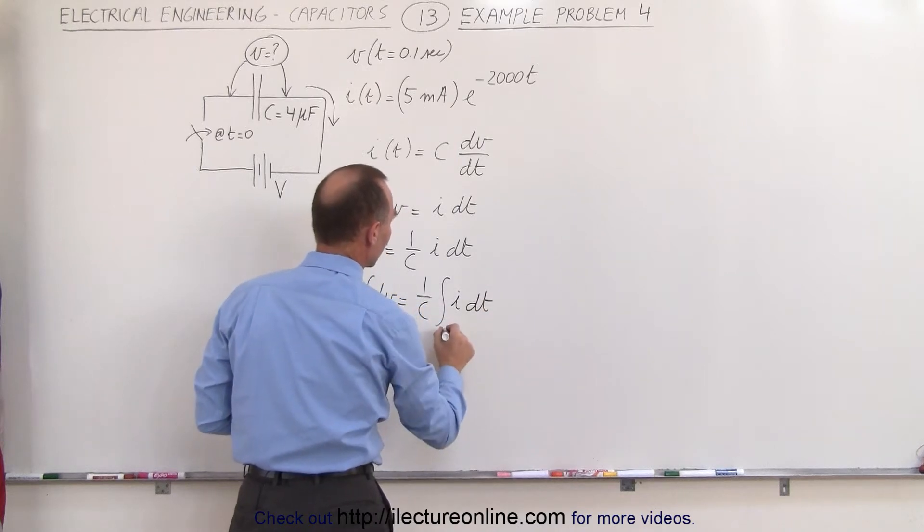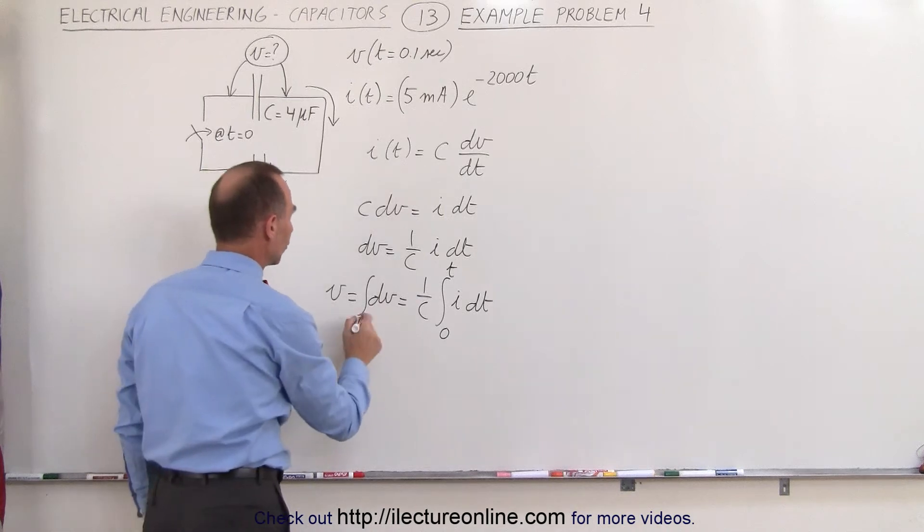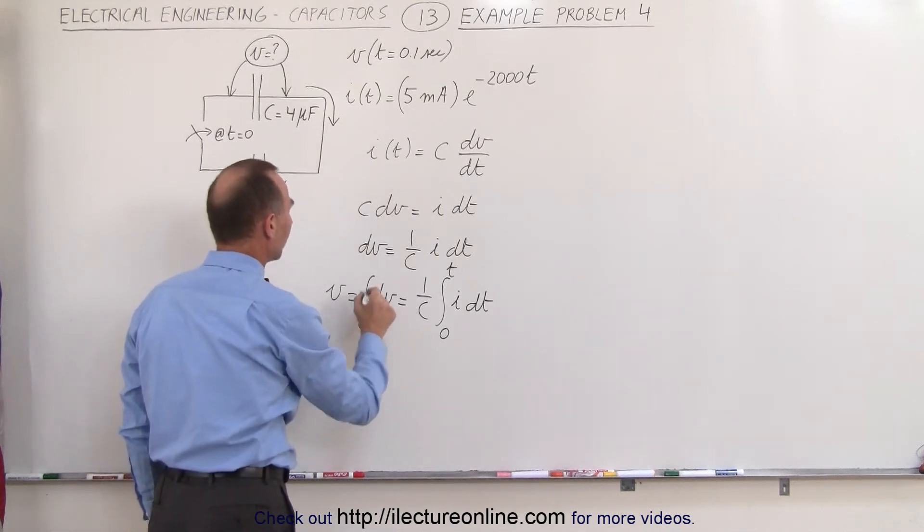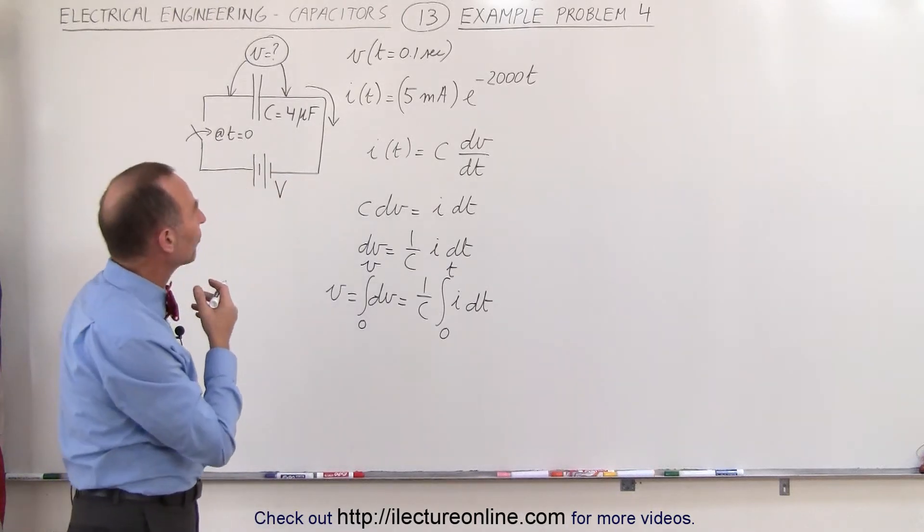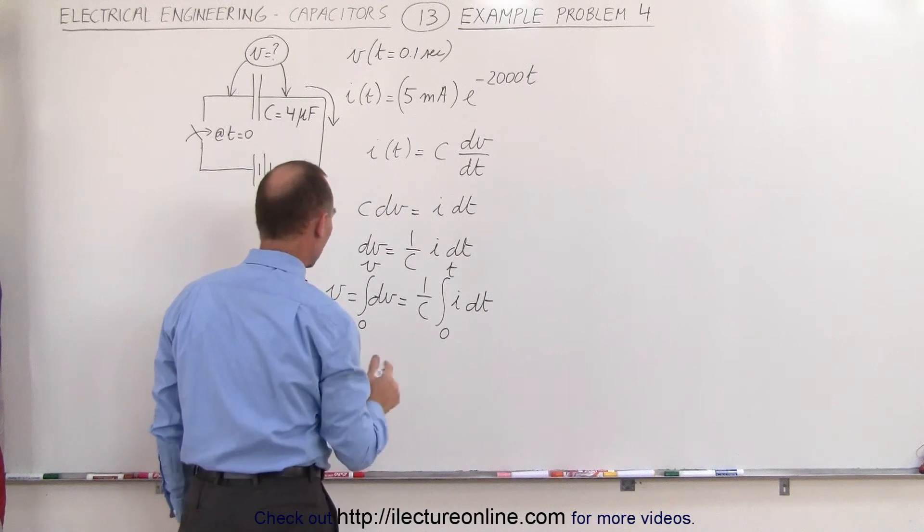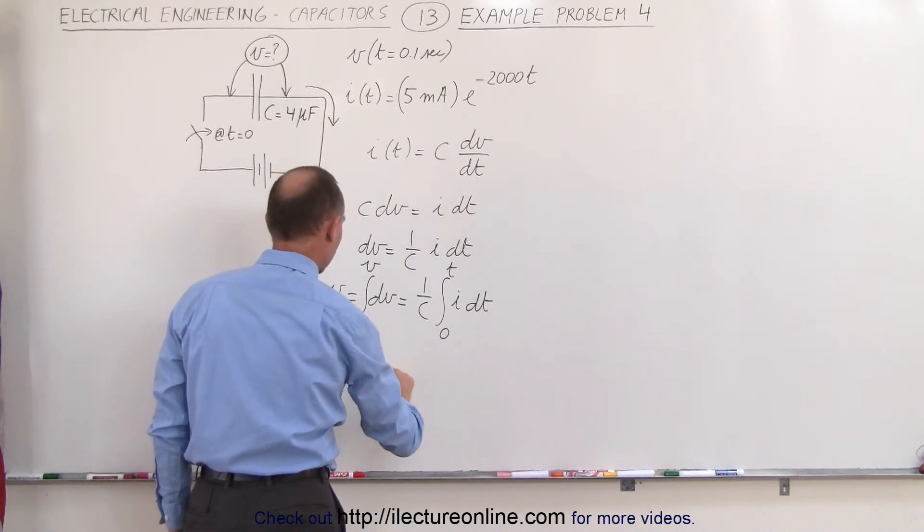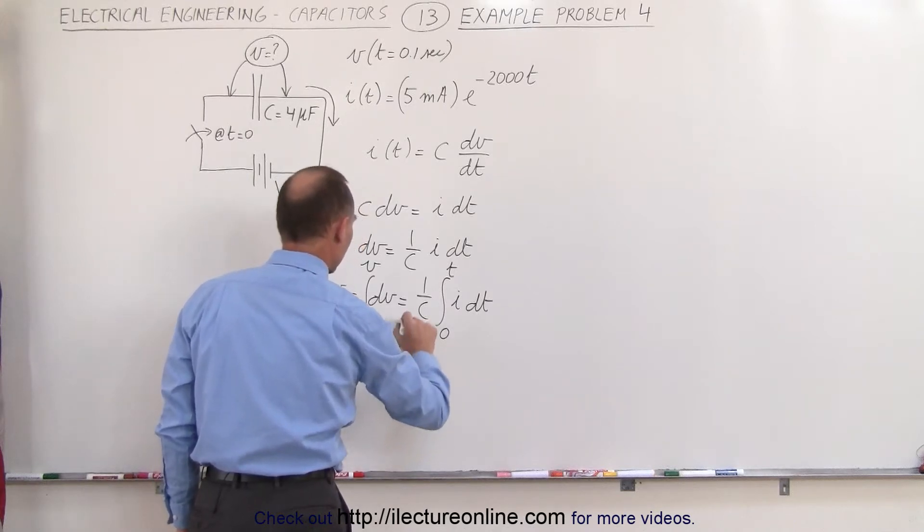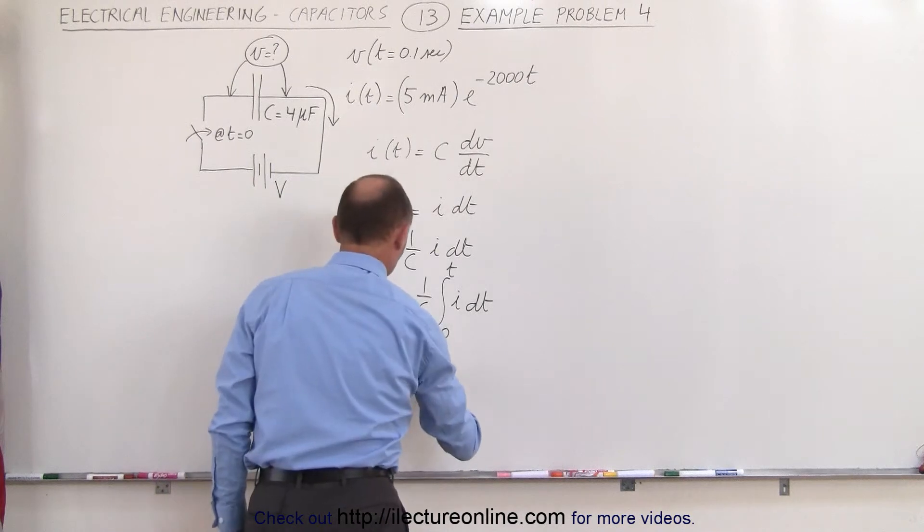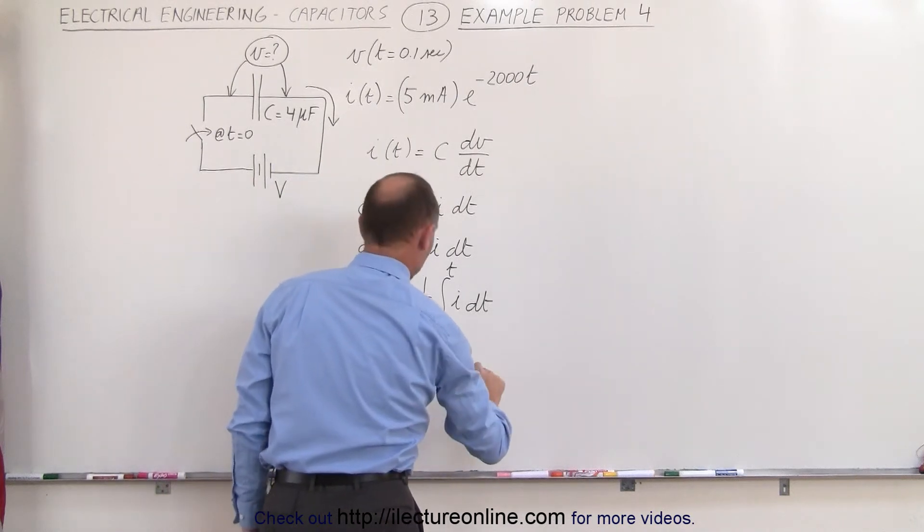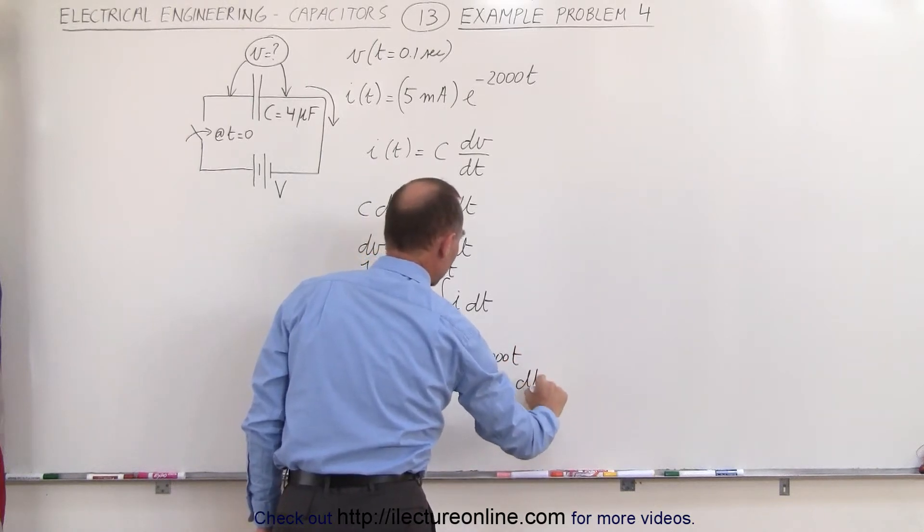So we go from t equals 0 to t equals time, and of course the voltage assuming we start at voltage equals 0 to voltage equals v. Which means that all we have to do is plug in the time here and integrate. So that means the voltage is equal to 1 over the capacitance times the integral from 0 to t of i dt and i is equal to 5 milliamps times e to the minus 2000 t times dt.